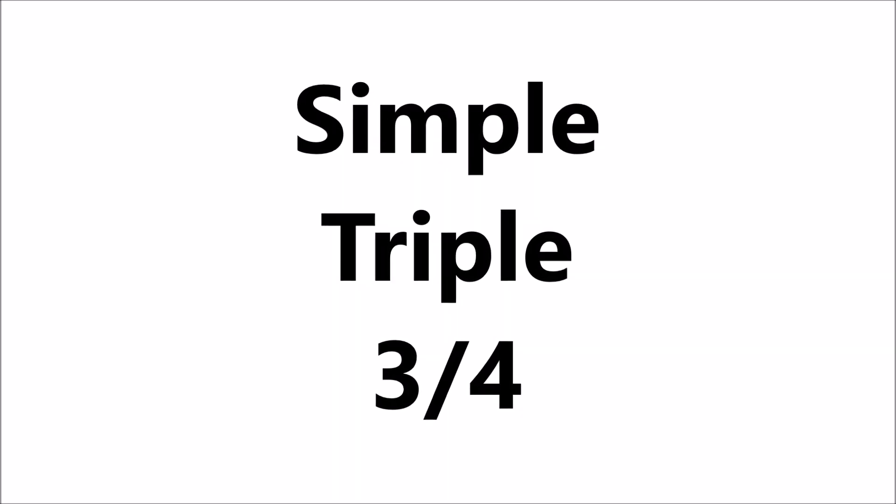So, for example, simple triple time would be 3-4 time, three beats in a bar, with a simple time signature such as crotchet beats.